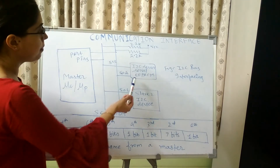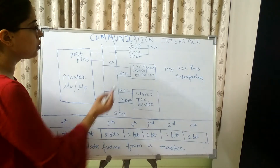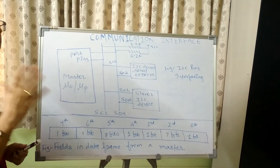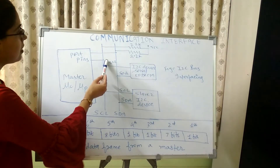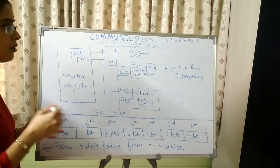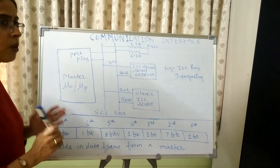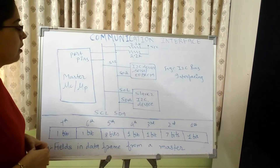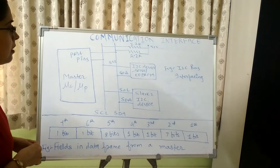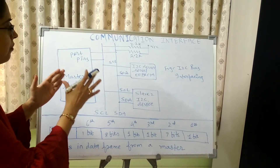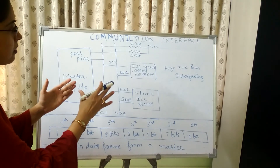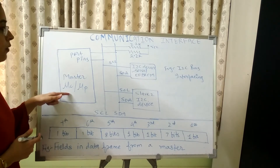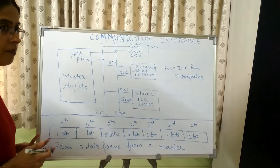The slave device compares the address assigned to it. If the address on the SDA line matches, the slave device understands that the master device wants to communicate with it. The SCL line generates clock pulses for synchronization between master and slave device, and the MSB of the data is always transmitted first. During the high of the clock pulse, the data is transmitted. After identifying the address, the master device waits for an acknowledgement bit from the slave device.